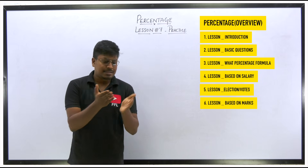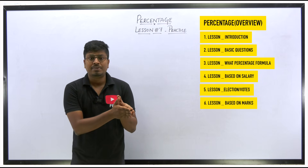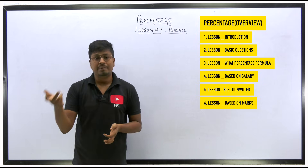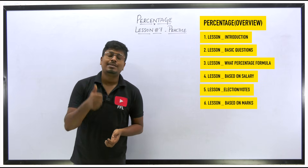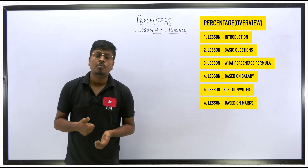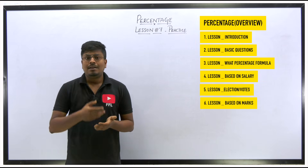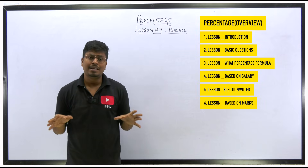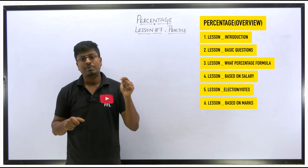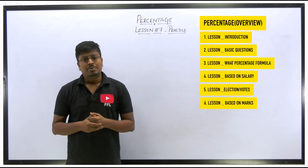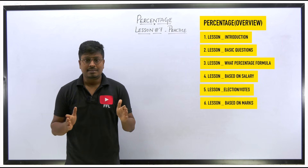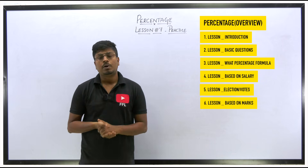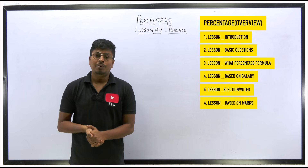The last previous lesson, lesson six, was based on marks — for example, a student got 30% of the total marks but failed by 20 marks. You can see these kinds of questions more in SSC exams, and even trickier five-star level versions in bank exams. These six lessons are more than enough on the topic percentages.